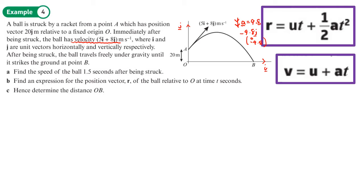It strikes the ground at point B. Part a: find the speed of the ball 1.5 seconds after being struck. This is SUVAT again, constant acceleration from gravity. We don't need to worry about which direction we're taking as positive because we're writing in terms of i and j. Acceleration is negative 9.8 j, time is 1.5 seconds, initial velocity is 5i plus 8j.